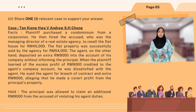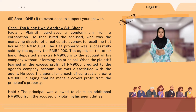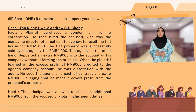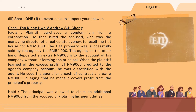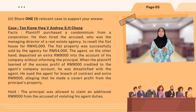The holding is that the principal was allowed to claim the additional RM9,000 from the accused for violating his duties. In further explanation: the plaintiff employed the defendant, a managing director of a property company, to sell the apartment for RM45,000. The defendant sold it for RM54,000 but credited the extra RM9,000 to his company's account without the principal's knowledge. The principal later discovered the extra profit and sued the agent for violating the contract. The court decided that the principal can claim the extra amount of RM9,000 from the agent for violating his duties.